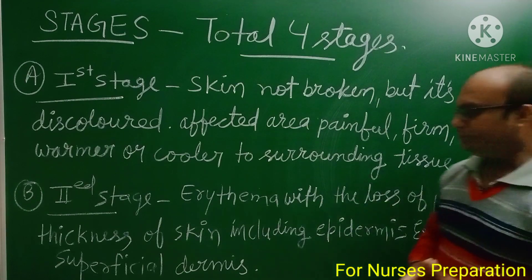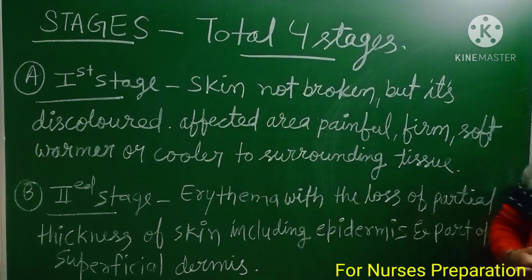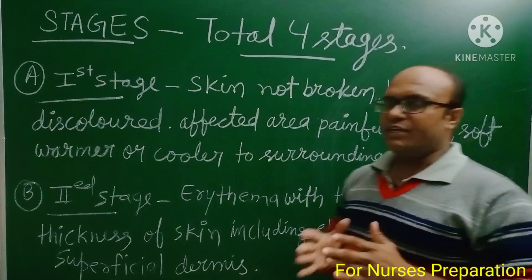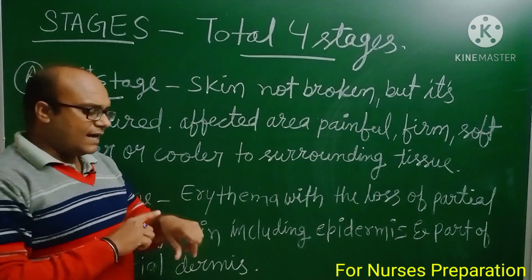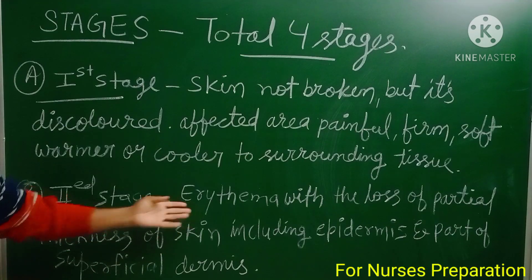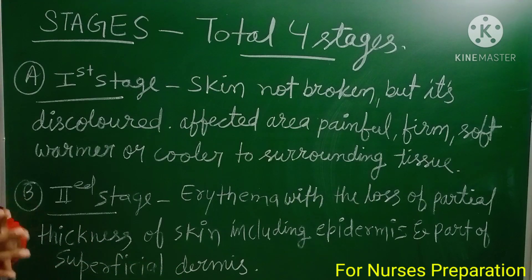Stage 2: There is loss of partial thickness of skin, including the epidermis and part of the superficial dermis. The upper layer of the skin is broken, redness is present, and the superficial dermis is also affected.